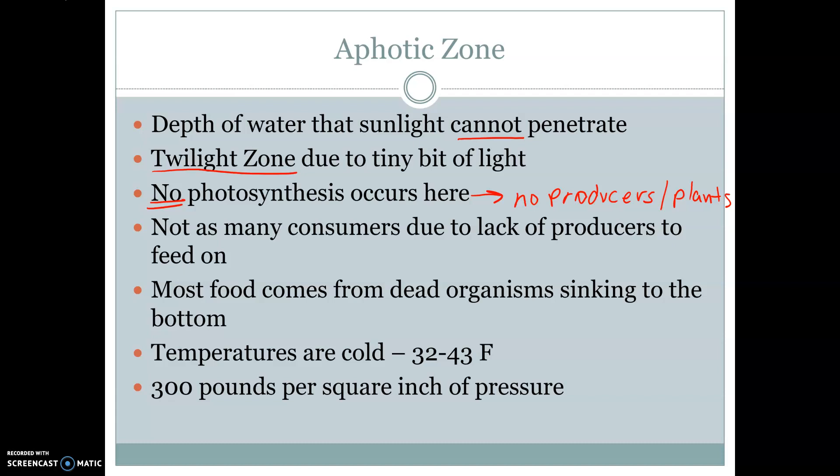Remember, 90% of all of our ocean life is going to live in that photic zone layer. So most of the food that comes to our aphotic layer are dead organisms that are sinking to the bottom of the ocean, and the animals that live here are going to feed off of these dead organisms.